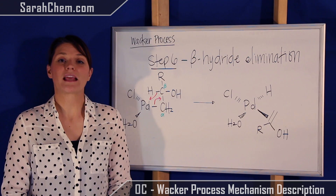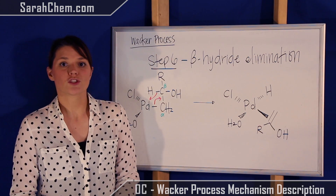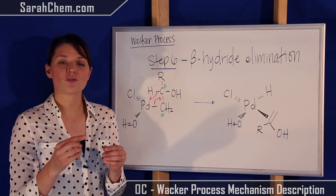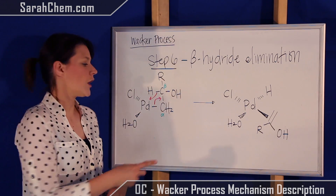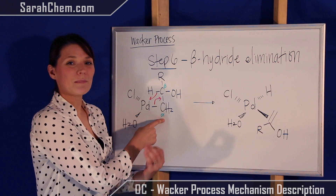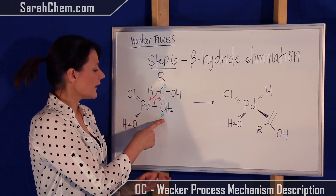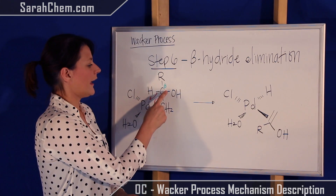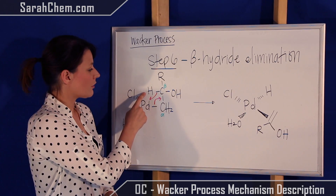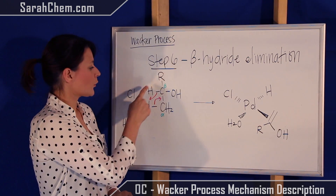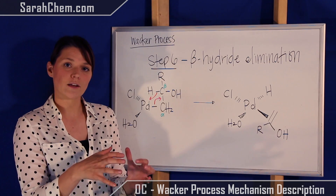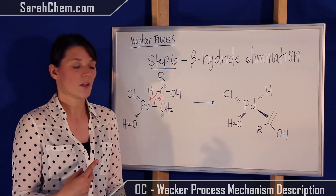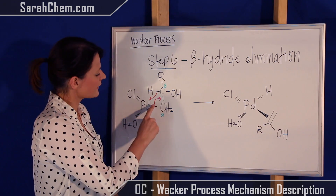Step six is beta hydride elimination. 'Beta' refers to the position relative to where the metal is. The carbon immediately adjacent to palladium is alpha; the carbon adjacent to alpha is beta. On that beta carbon we see a hydrogen — the beta hydride. It's called a hydride because hydrogen takes both electrons away with it, giving it a negative charge.